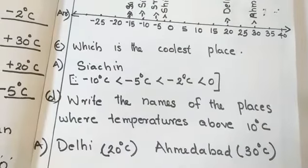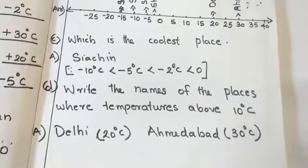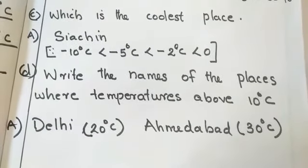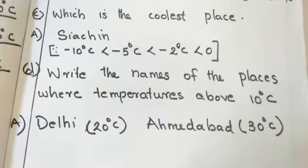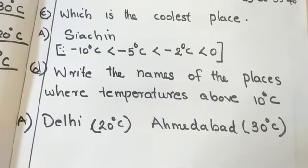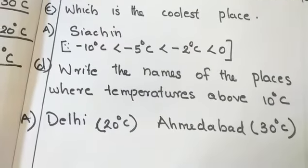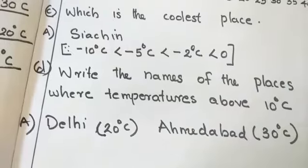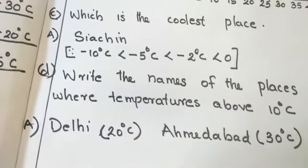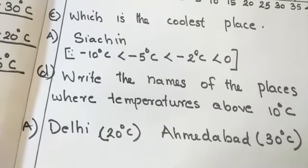Next question. To write the names of the places where temperatures above 10 degree Celsius. It is quite natural. You can write greater than 10, 20 degree and 30 degree are the places Delhi and Ahmedabad respectively. OK. So, you understood children how we can use the number line of integers.